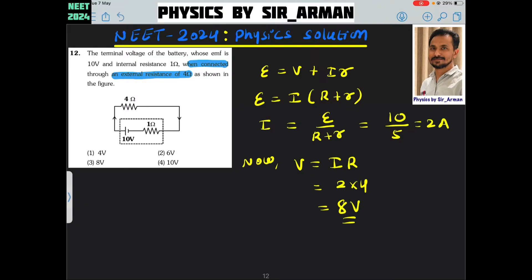Here it is the terminal voltage of the battery. What is terminal voltage? The terminal voltage is the voltage developed across the external resistance which is connected to the battery having some internal resistance which is given in the figure.